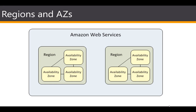When launching an EC2 instance, you first select a region. With availability zones, you can also select which AZ you want to launch your EC2 instance into. If you distribute your instances across multiple availability zones and one fails, you can design your application so that an instance in another availability zone can handle the requests — hence the redundancy and high availability.